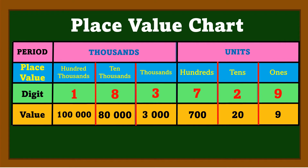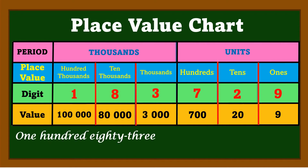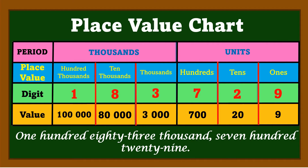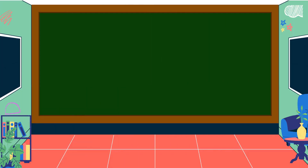If we read this number, it is 183,729. That is one number having 6 digits. Do you understand the place value and value of a digit in a number? If yes, let's have an exercise.